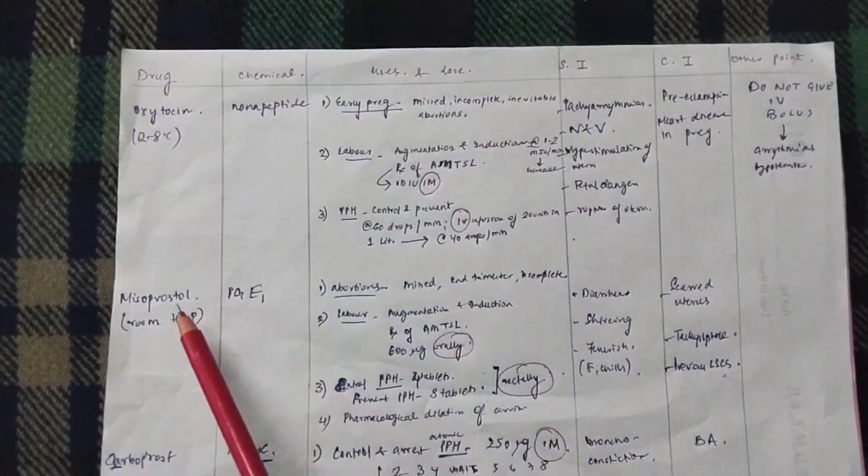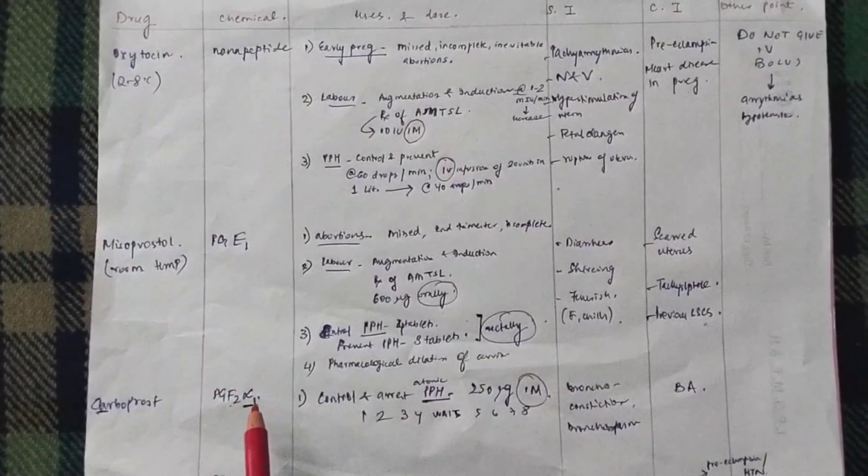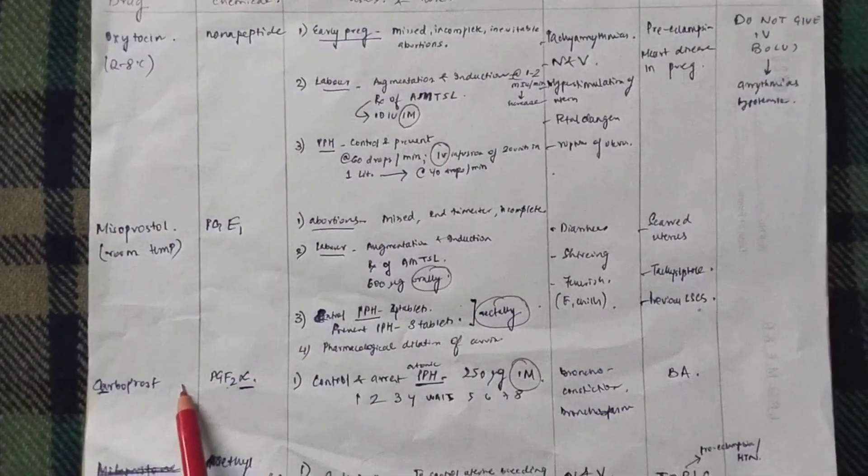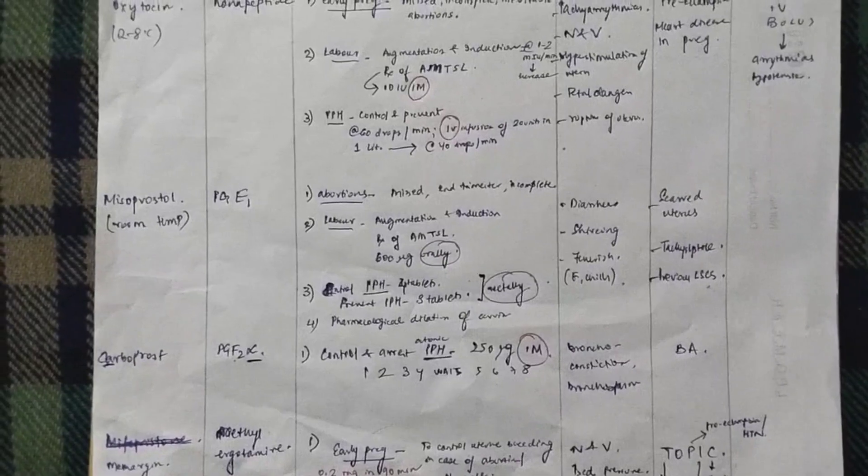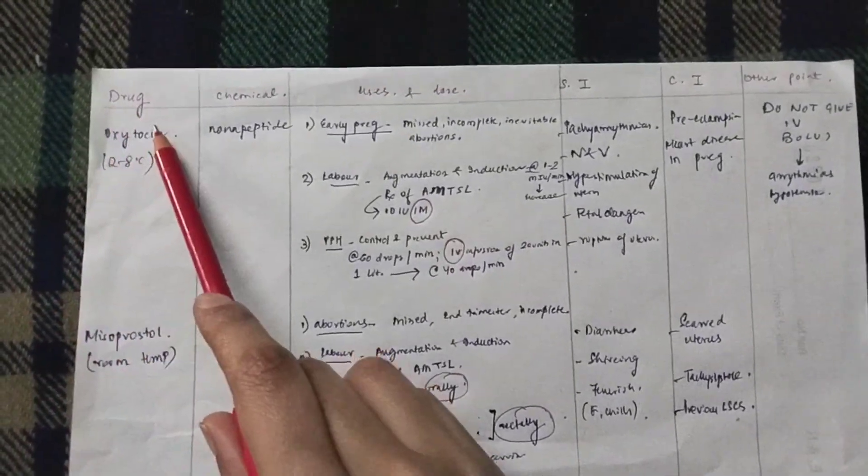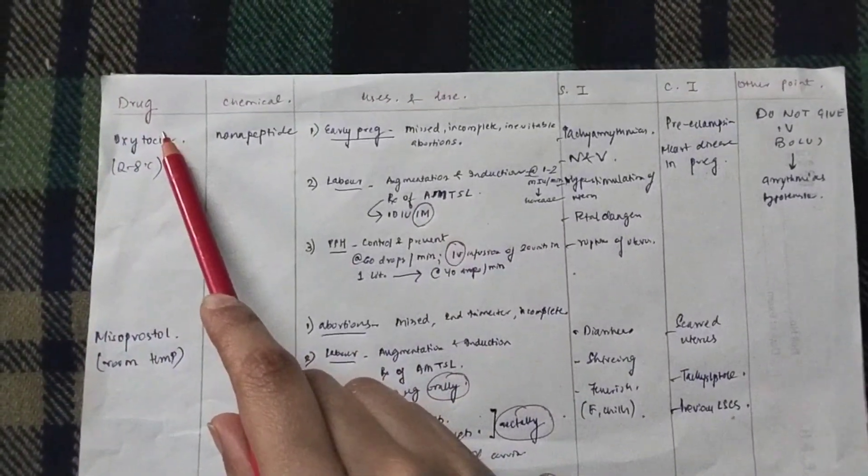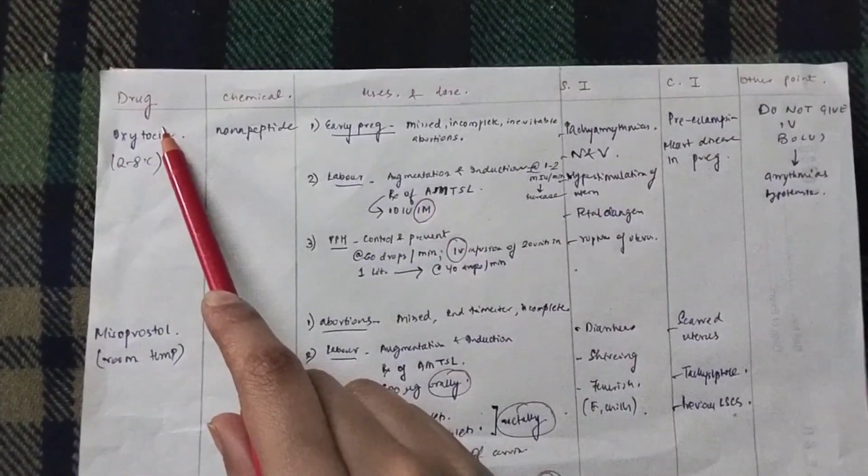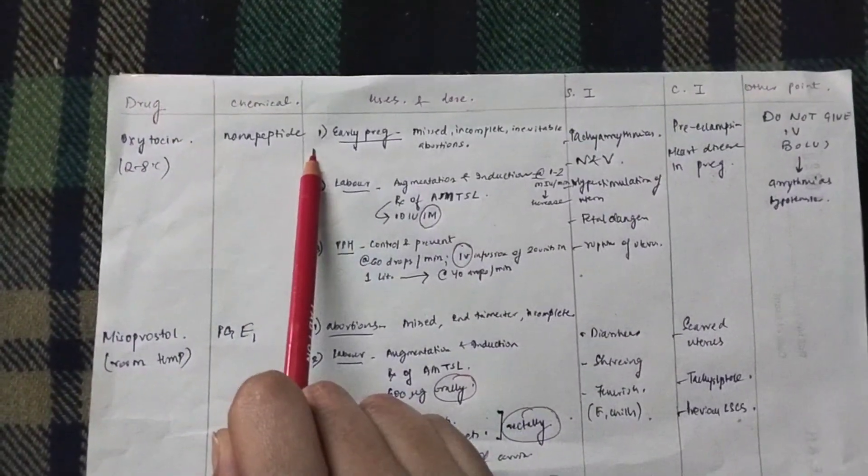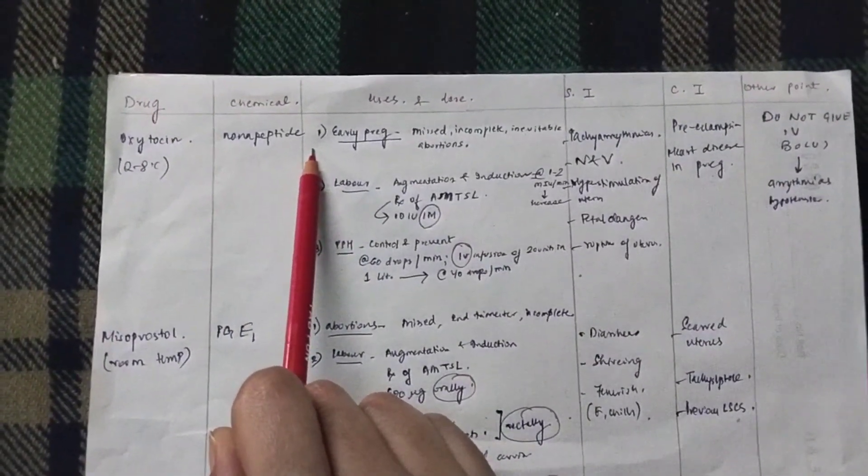Prostaglandins PGE1, that is misoprostol. Prostaglandin F2-alpha, that is carboprost. Prostaglandin F2-alpha, that is methyl ergometrin, that is methergin. Now, oxytocin is an oxytocic drug. It is a nonapeptide. What are the uses?